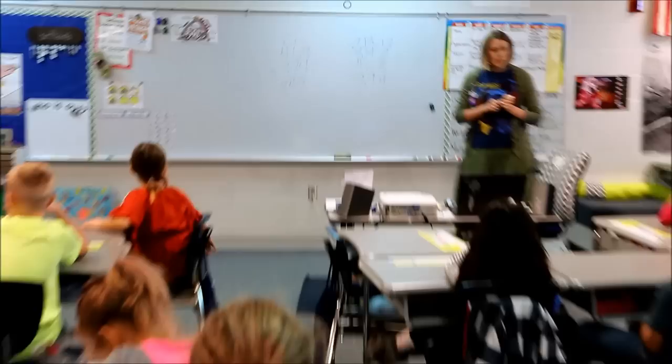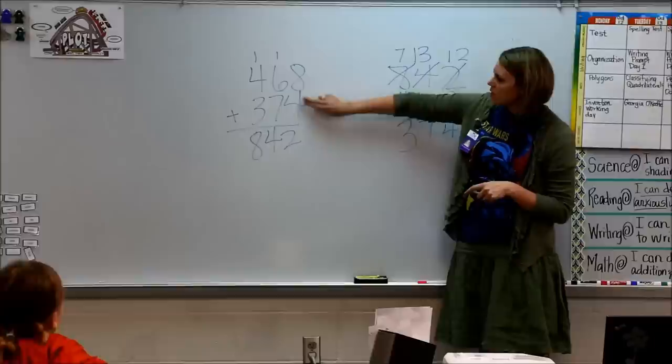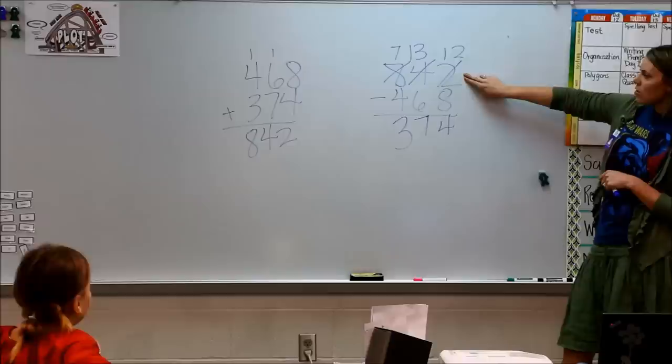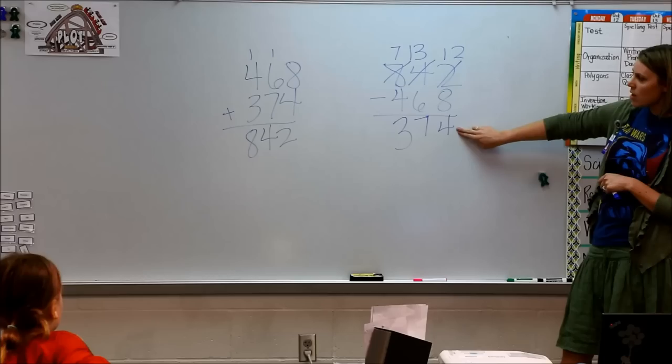So when we look at those, we can kind of see — I see three groups here. I see 468, 374, and 842. And over here I see 842, 468, and 374.